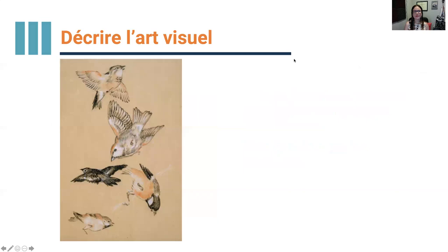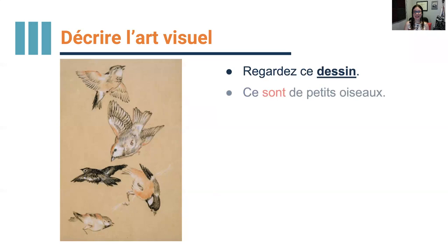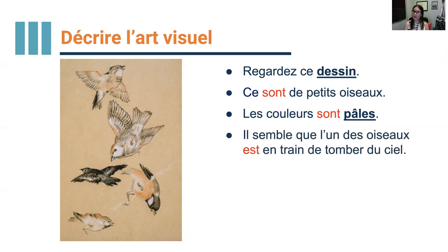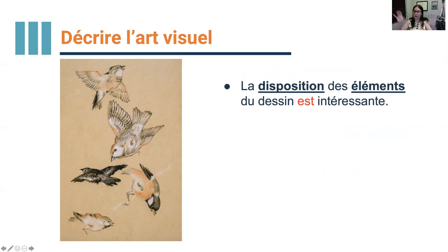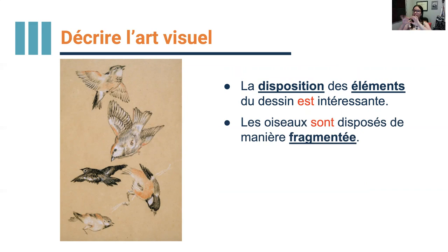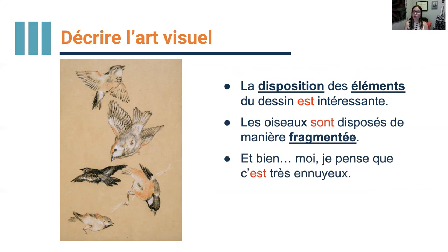Regardez ce dessin. Ce sont de petits oiseaux. Les couleurs sont pâles. Il semble que l'un des oiseaux est en train de tomber du ciel, et il y en a un autre qui est sur une branche. La disposition des éléments du dessin est intéressante — 'la disposition' means the layout, how they're arranged. Les oiseaux sont disposés de manière fragmentée. Eh bien, moi, je pense que c'est très ennuyeux — boring.